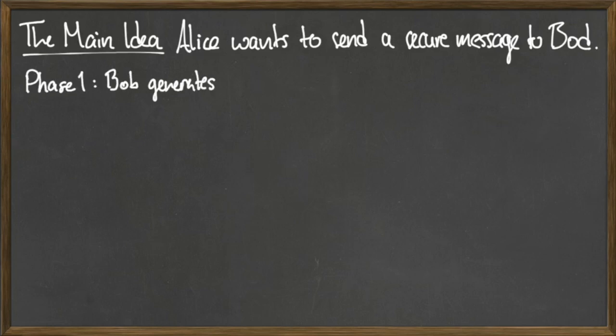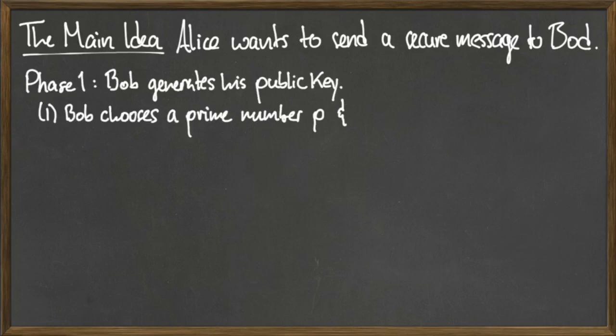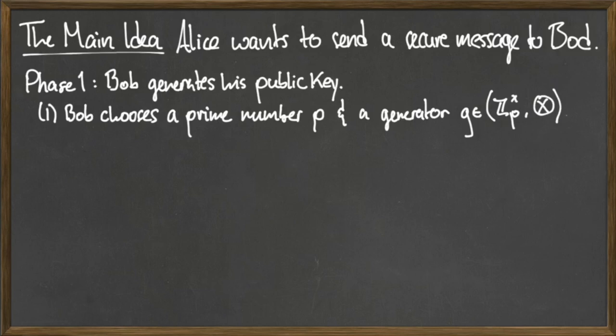The ElGamal encryption system consists of three main phases, which alternate between Bob and Alice. In phase one, Bob generates his public key, which will be made available to Alice.